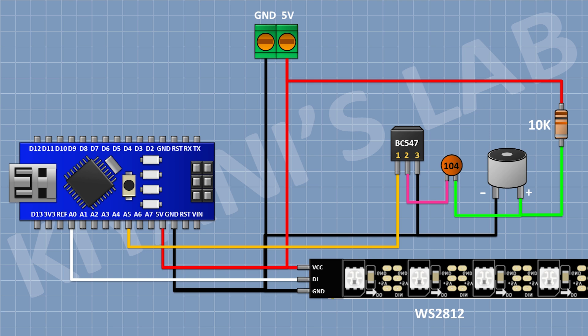Now connect the BC547 transistor — connect its pin 1 to the A5 pin of Arduino, and pin 2 to the remaining pin of the capacitor, and pin 3 to ground. Now connect a 10k resistor with one pin to the 5V pin of Arduino and the other pin to pin 1 of the transistor. Now connect a 100k resistor with one pin to pin 1 and the other pin to pin 2 of the transistor. We have completed all the connections.